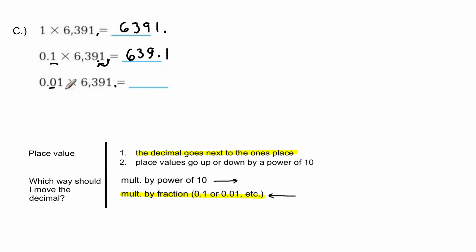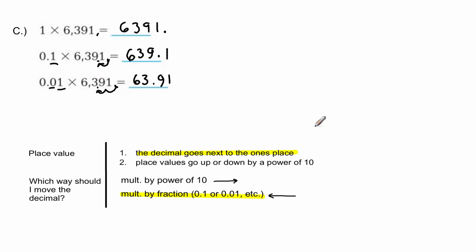For one-hundredth, there are two decimal places, so I move the decimal two spaces to the left — it lands between the 3 and the 9, giving 63.91. When multiplying by a fraction, move the decimal to the left, counting the decimal places to know how many spaces.